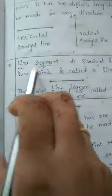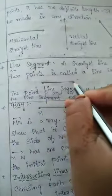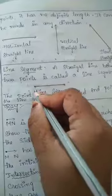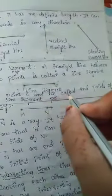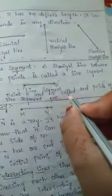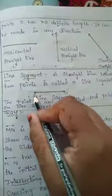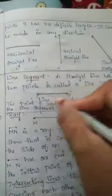Next is line segment. A straight line between two points is called a line segment. Suppose the points are P and Q — P and Q are called the end points of the line segment PQ.